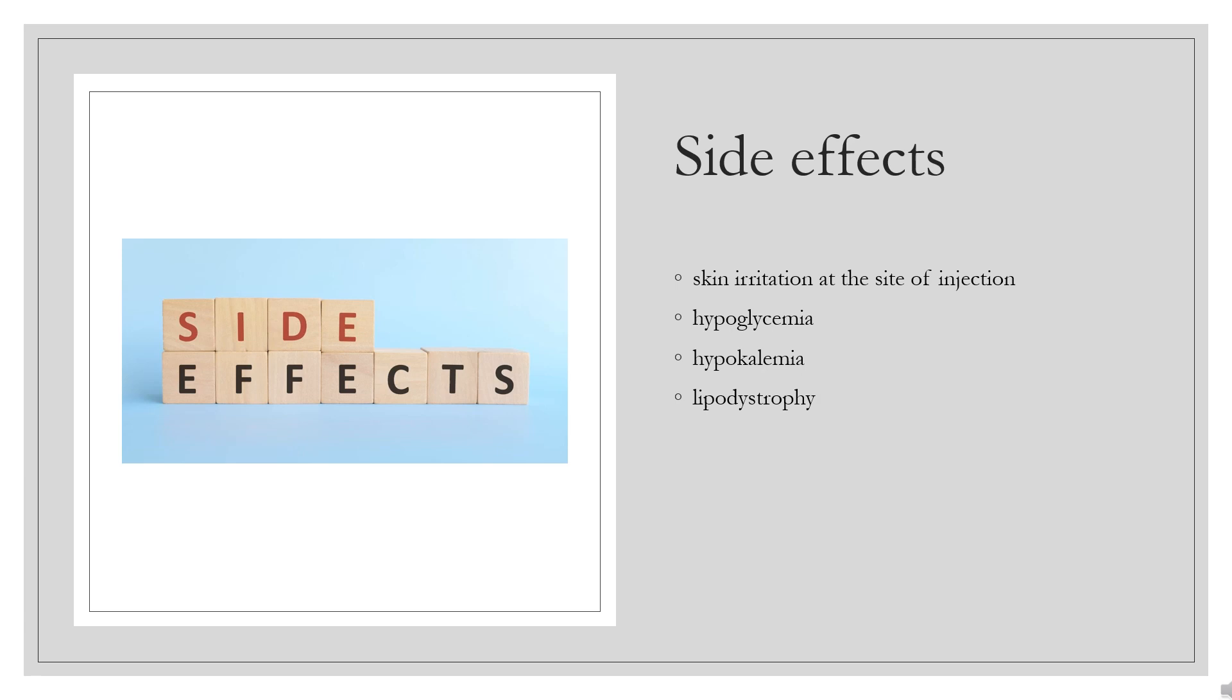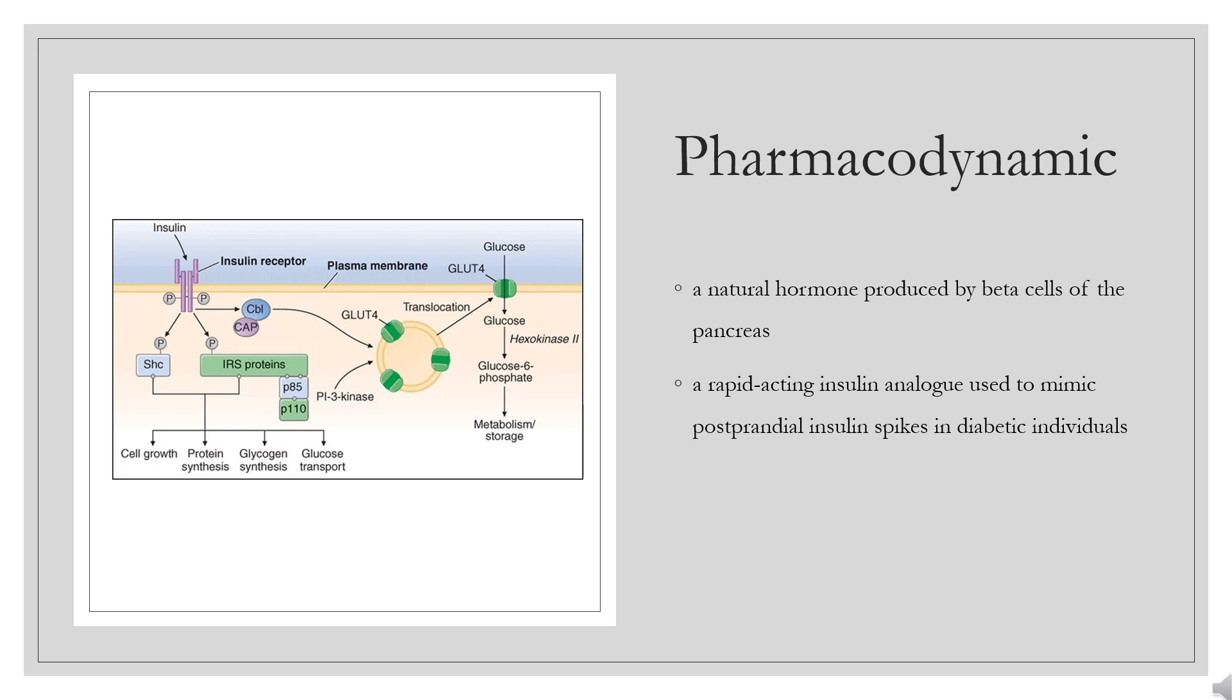Pharmacodynamic: Insulin is a natural hormone produced by beta cells of the pancreas. In non-diabetic individuals, a basal level of insulin is supplemented with insulin spikes following meals. Increased insulin secretion following meals is responsible for the metabolic changes that occur as the body transitions from a postabsorptive to absorptive state.